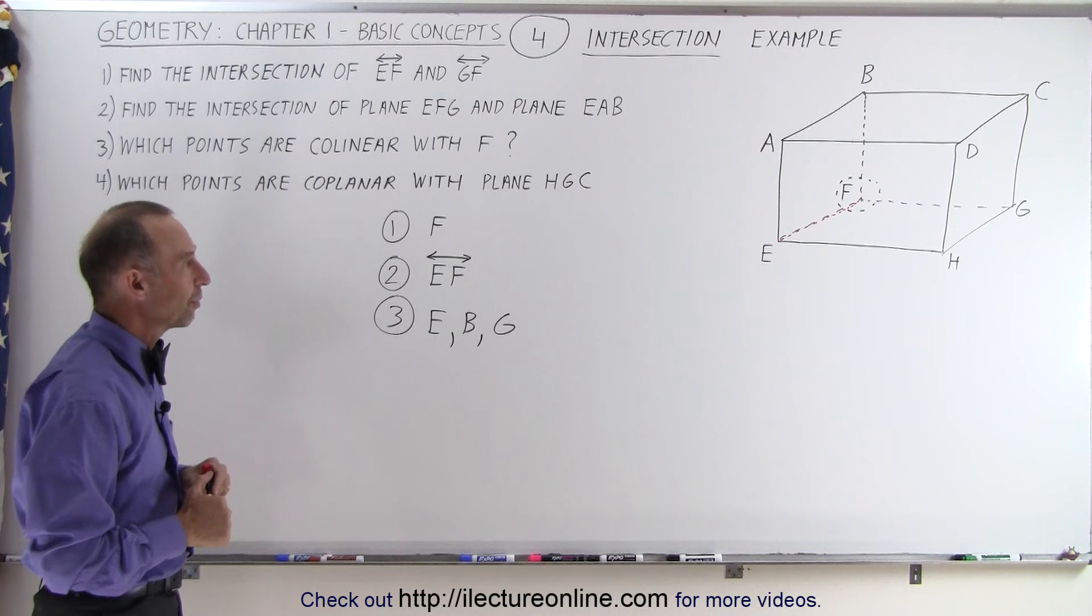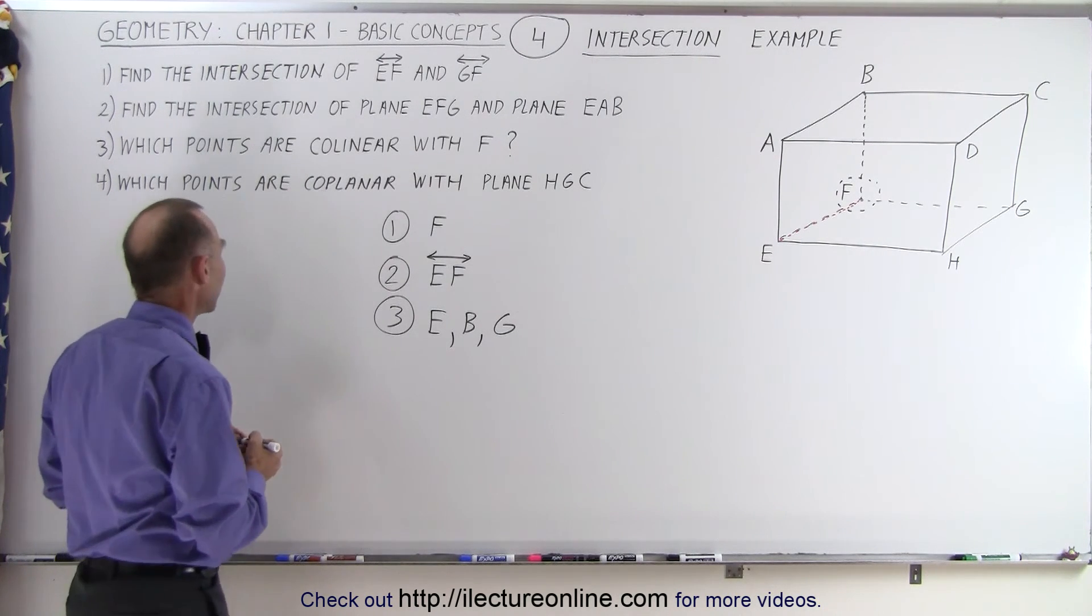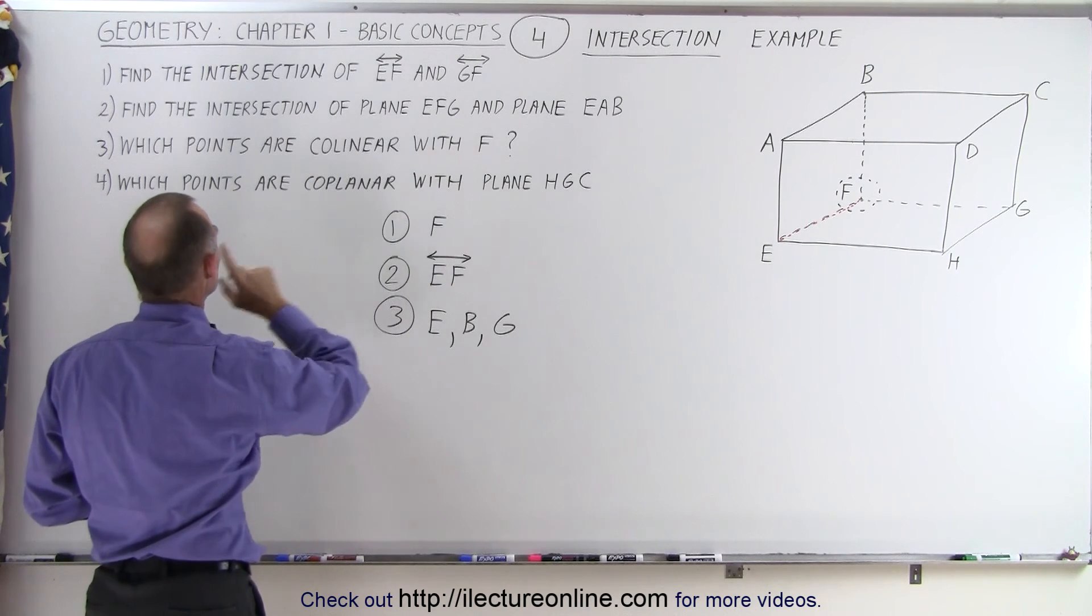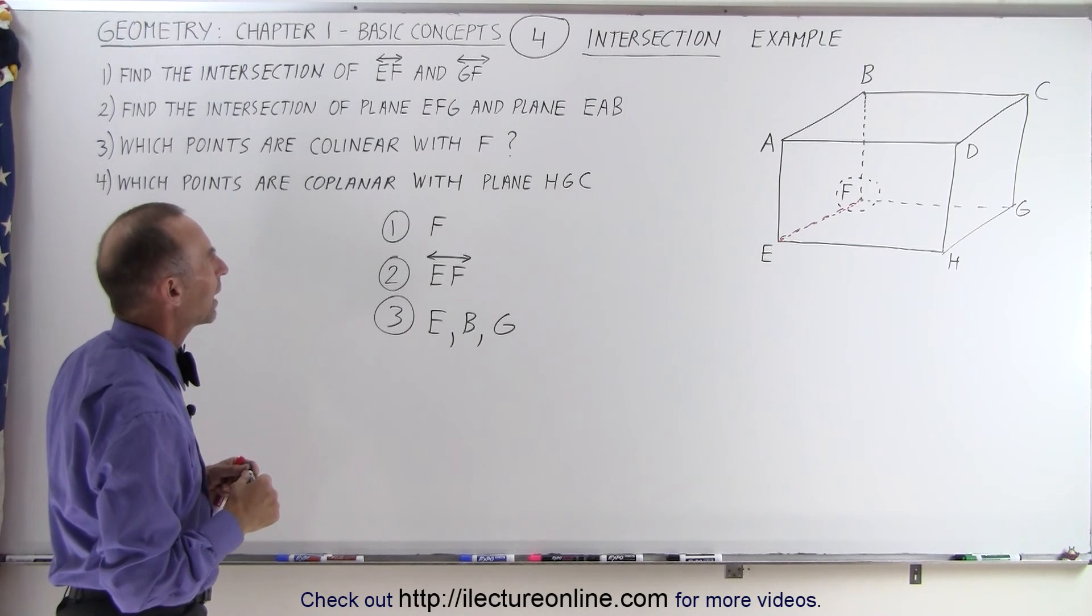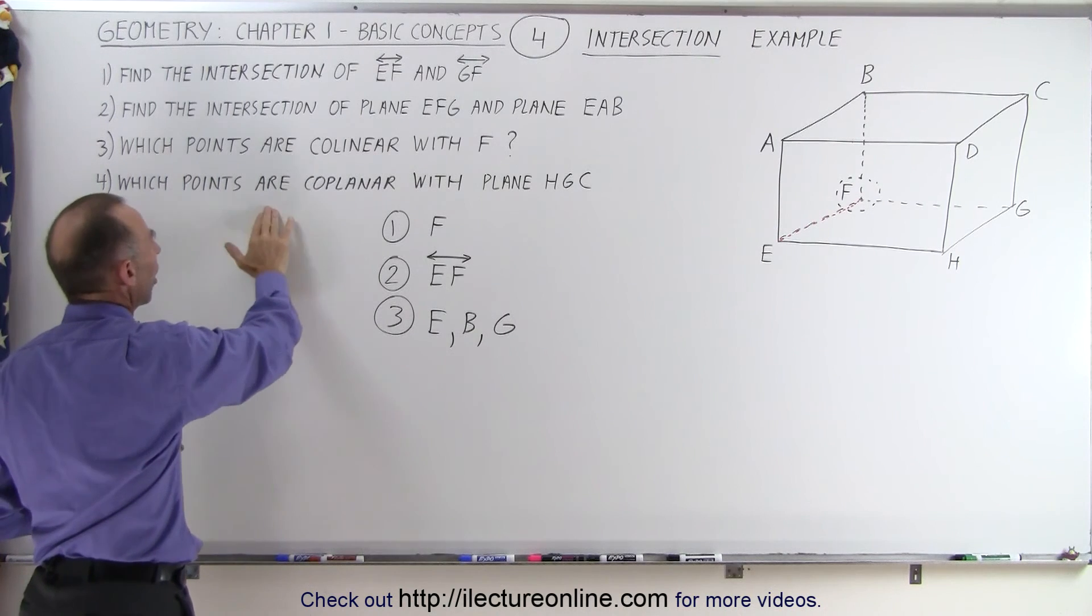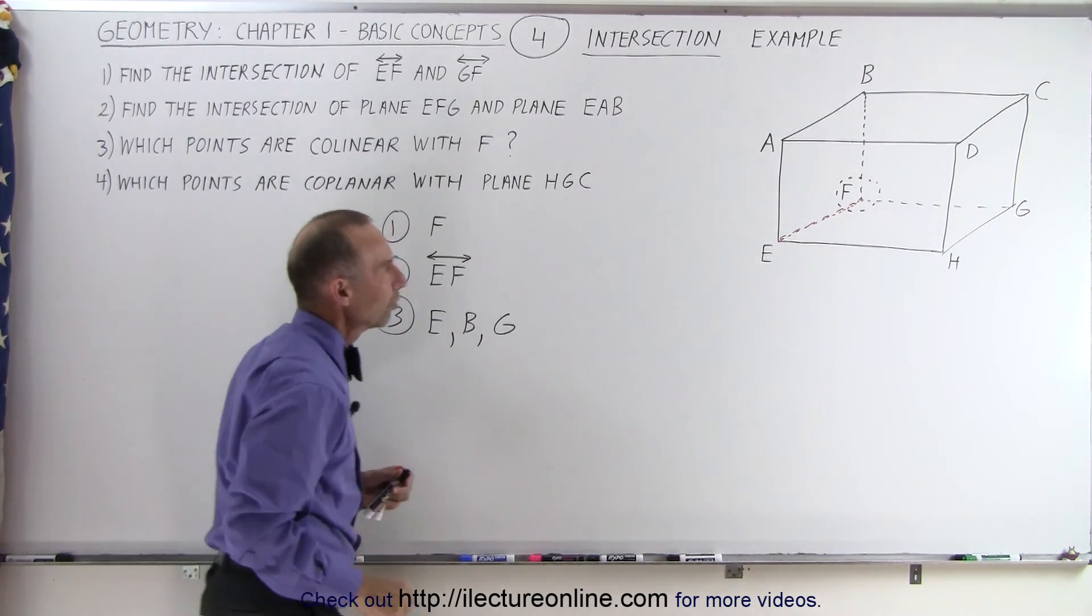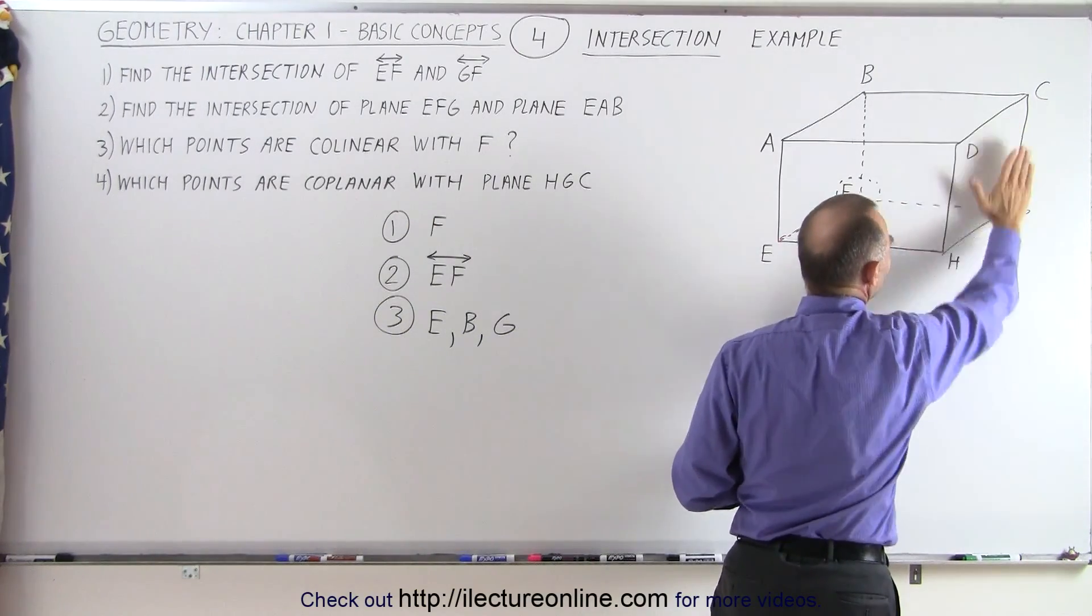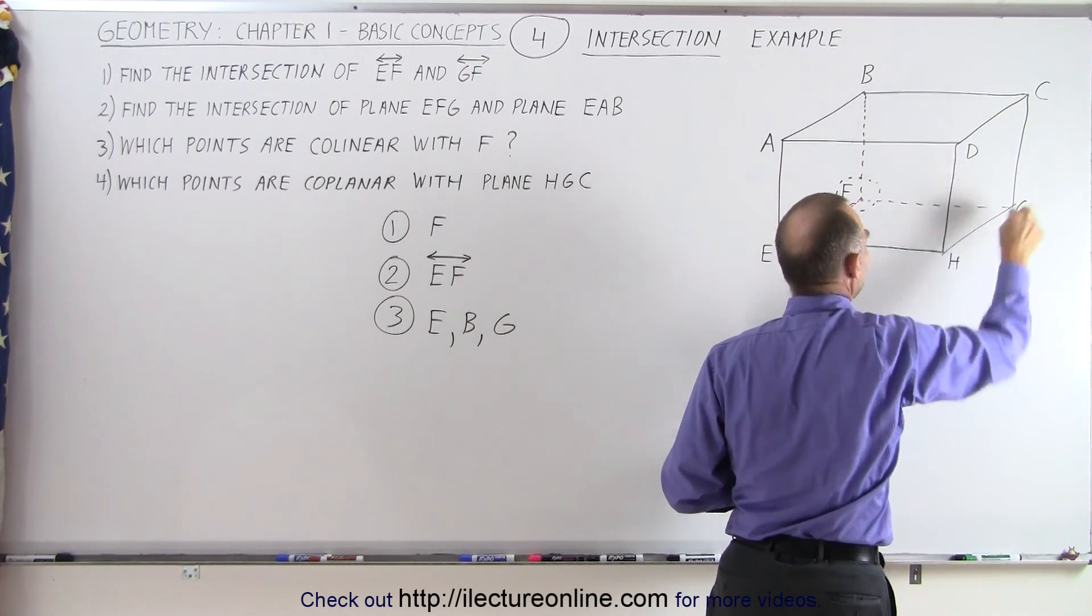And finally, number four: which points are coplanar with plane HGC? So HGC, notice that represents the plane on the right side of the box. There's one more point that is on that same plane. So D is a point that's coplanar to the three points HGC there on the plane on the right side of the box.